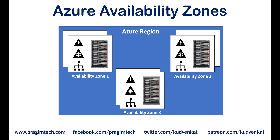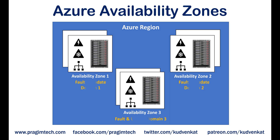Not all regions have availability zones, but regions that do have availability zones have a minimum of three separate zones. You can think of each availability zone as a separate fault domain and update domain. So in a given Azure region, if you have three availability zones, then it's like you have three fault domains and three update domains.